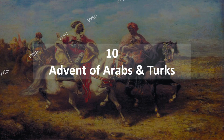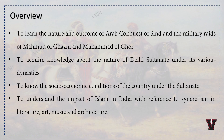Let us start Chapter 10: Advent of Arabs and Turks. We are going to learn the nature and outcome of Arab conquest of Sindh and military raids of Mahmud of Ghazni and Muhammad of Ghore, acquire knowledge about the nature of Delhi Sultanate under its various dynasties, know the socio-economic conditions under the Sultanate, and understand the impact of Islam in India with reference to syncretism in literature, art, music, and architecture.